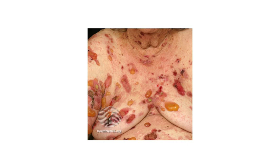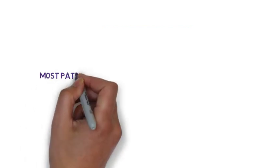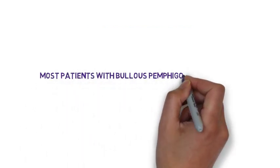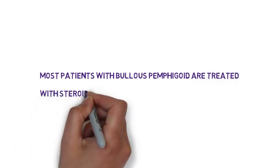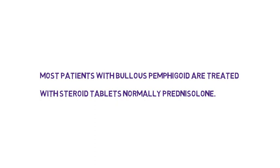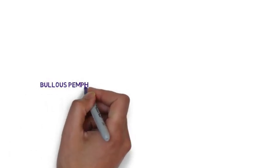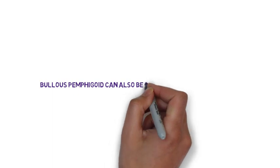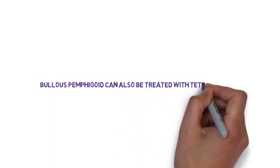As well as the skin biopsy, a direct immunofluorescence of the skin biopsy will highlight the antibodies along the basement membrane. Most patients with Bullous Pemphigoid are treated with steroid tablets, normally prednisolone. They can also be treated with antibiotics such as tetracyclines.